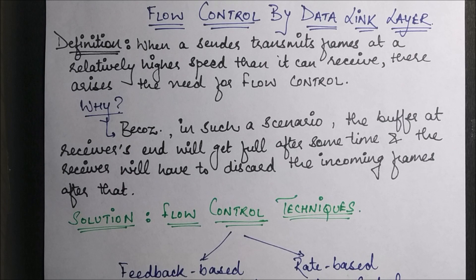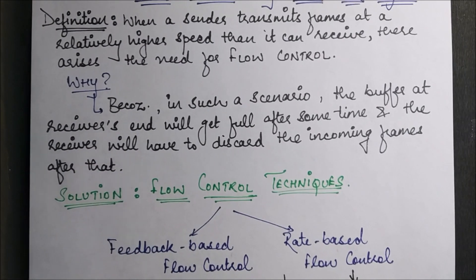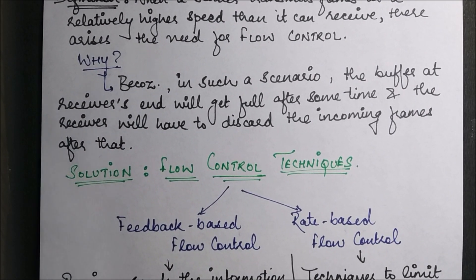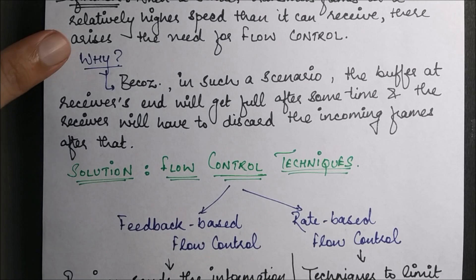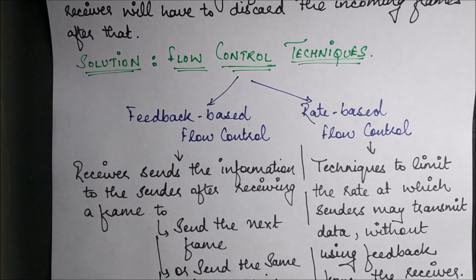If we categorize the flow control techniques, there are two basic types: the first one is feedback-based flow control and the second one is rate-based flow control. We are going to discuss feedback-based flow control first, as most of the numericals come from this part. But first, what is the basic idea of both terms?